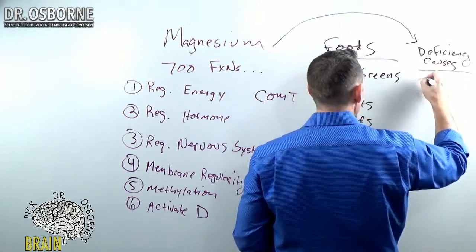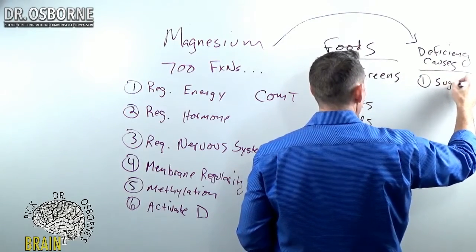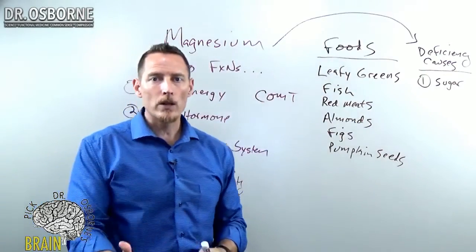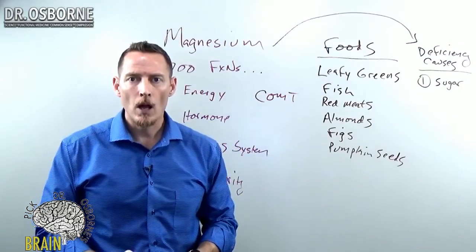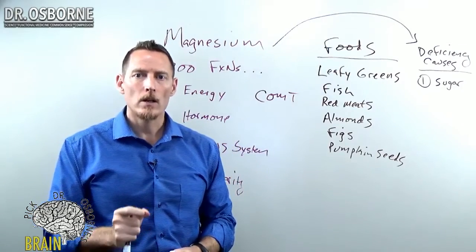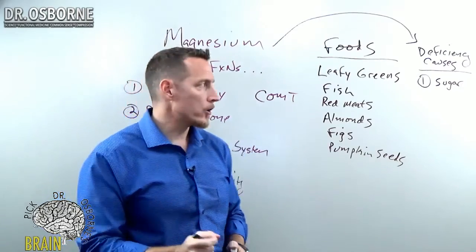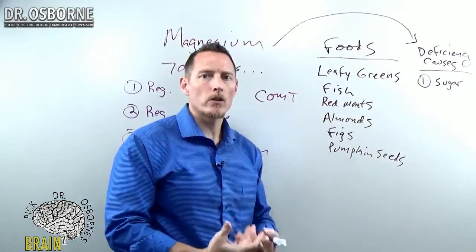Number one, the number one in the U.S. diet is sugar. And when I say sugar, I'm really reflecting on processed sugar. I'm not talking about natural sugars that might be found in fruits. I'm talking about processed sugar. So if it's got added sweetener, added sugar in it,